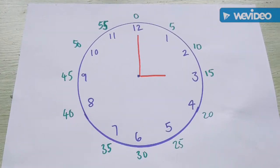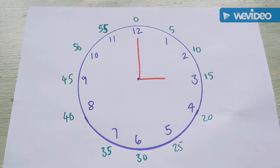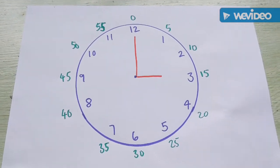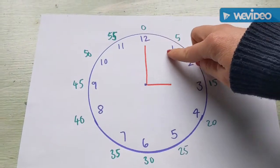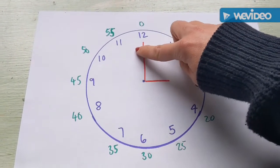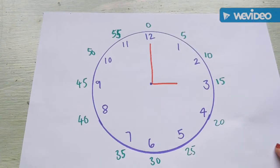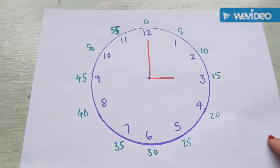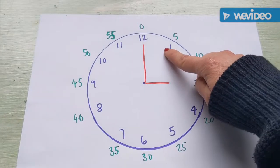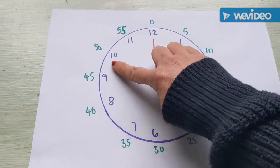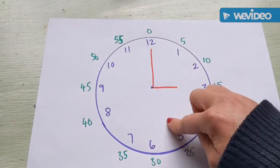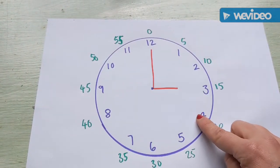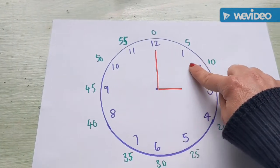We're going to start by looking at this analogue clock face. You'll notice that the numbers going around the clock start from one and go round to twelve. This builds on the work we did yesterday about the number of hours in a day and night - twelve hours in the day and twelve hours in the night. So these numbers going round are our twelve hours of the day and twelve hours of the night. It's really important to remember that these numbers around the clock are representing the hours.